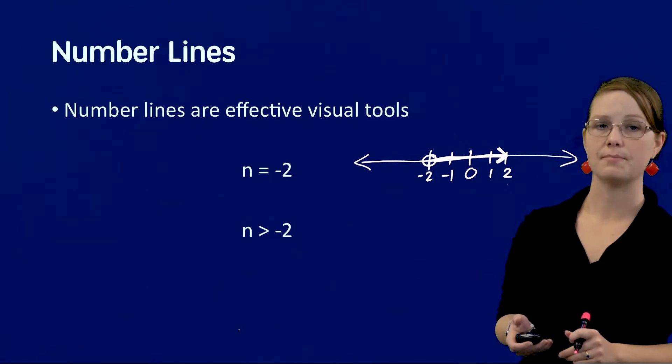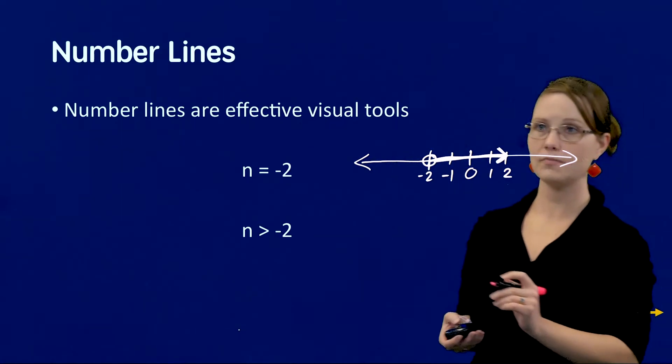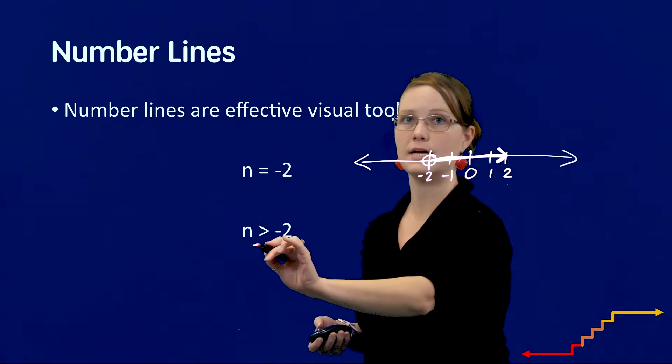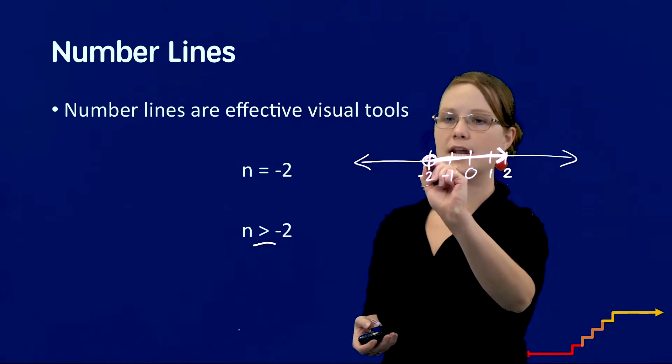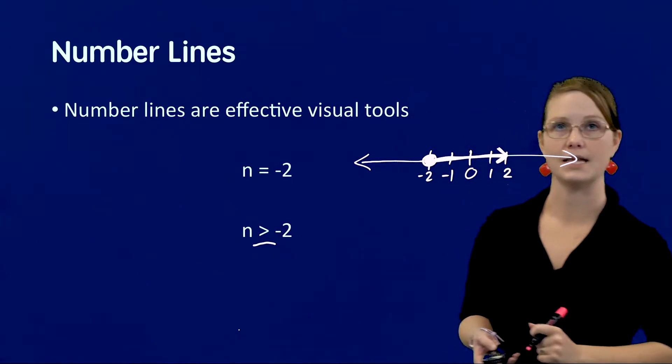If I wanted to represent n is greater than or equal to negative 2, I would want to make sure that I denote that here, let me draw a little line, as n is greater than or equal to negative 2. And then I can shade in my dot to show that it can be negative 2.